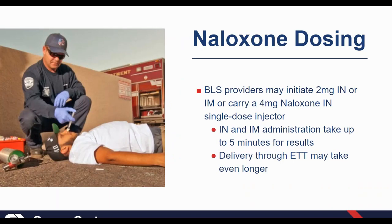For BLS providers — EMT basics — many protocols call for an initial 2 milligrams intranasal, 1 milligram in each nostril, or a 4-milligram naloxone intranasal single-dose injector. Give it at least five minutes for results — it's going to feel like eternity when that patient's face is blue, but you will see results. The reason you don't want to keep giving doses every minute is you want to give it time to work. The endotracheal or supraglottic route takes a long time — it has to be bagged into the lungs and absorbed through the capillary into the blood system — so that's not a preferred route.